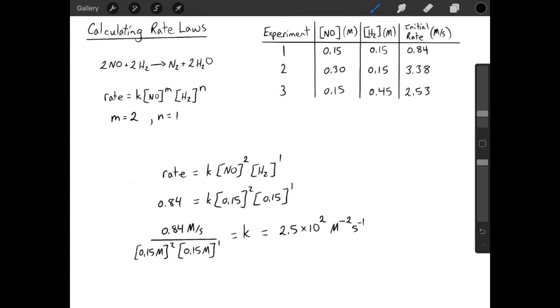When we've done our calculation, we can find that the value of K is about 250 molar to the minus 2 seconds to the minus 1. At this point, it's worth noting that the units for K are going to depend on the overall order of the reaction. A first order reaction or a second order or a third order reaction will all have different units for their K value.